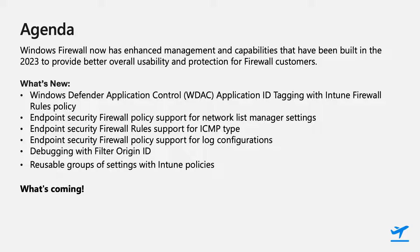We're going to cover what we've done with the Windows Firewall over the last year in creating new capabilities and enhanced management functionality, making it easier for you to use the Windows Firewall. We'll cover new things we've added: our integration with the Windows Defender Application Control App ID tagging feature, relief for AAD joined machines with the new Network List Manager settings, support for ICMP inbound and outbound rules, easier firewall log configuration directly from Intune, new additions to the CSP, and improvements to debugging dropped packets and connections.